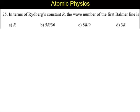In terms of question 25, in terms of Rydberg's constant R, the wave number of the first Balmer line is: alternatives R, 5R by 36, 8R by 9, and 3R. Now,